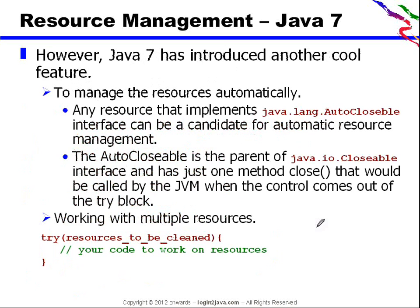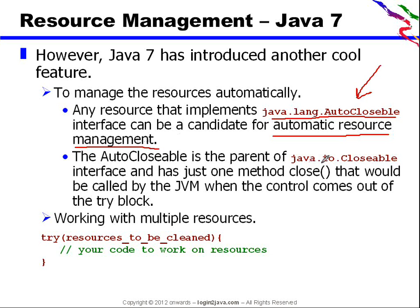Java 7 has introduced a cool feature to manage resources automatically. Any resource that implements the java.lang.AutoCloseable interface can be a candidate for automatic resource management. A new interface has been introduced. For IO, AutoCloseable is a parent of the java.io.Closeable interface, and it just has one method: close. That close method is called by the JVM automatically when control comes out of the try-block.